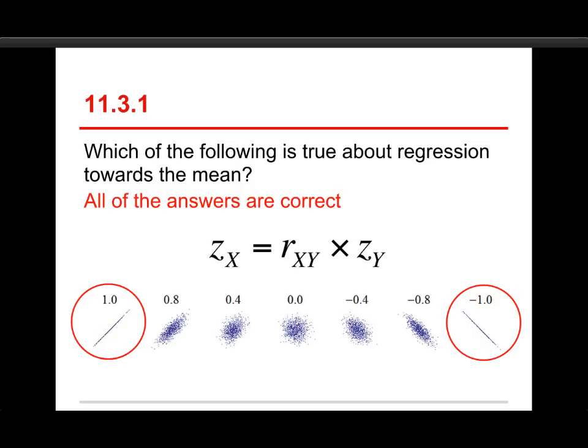Regression towards the mean means that the predicted scores are less extreme than all of the others. And it's really easy because what we have right here is this equation where you start with everybody's Z-score on Y, and then you multiply it times the correlation coefficient. And unless the correlation is a perfect plus or minus 1, the Z-scores on X are going to be smaller because the correlation will be less than 1, it will be closer to 0.